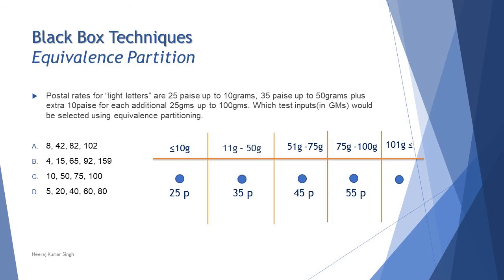But still we need to check the other options. C: 10 the first range, 50 the second range, 75 the third range, and 100 the fourth range. You have to be very sure that equivalence partition selects any value from that range. Do not be worried about boundary values.